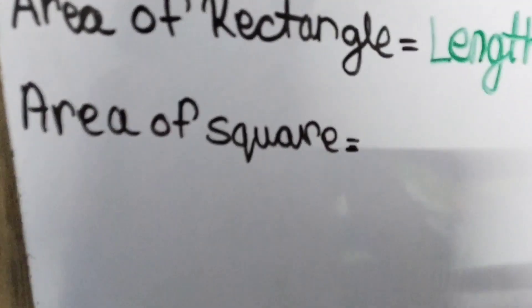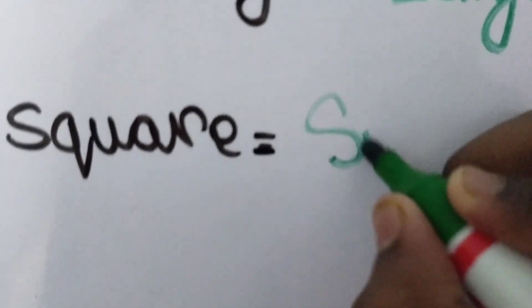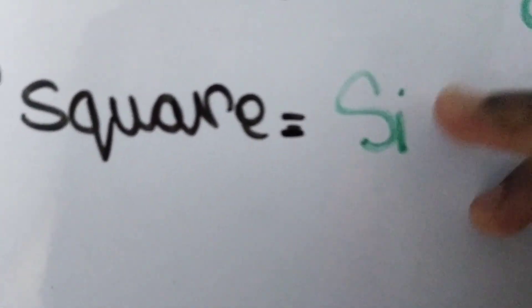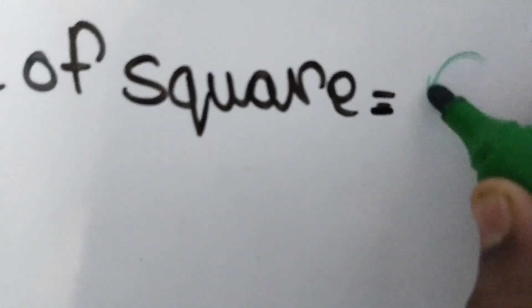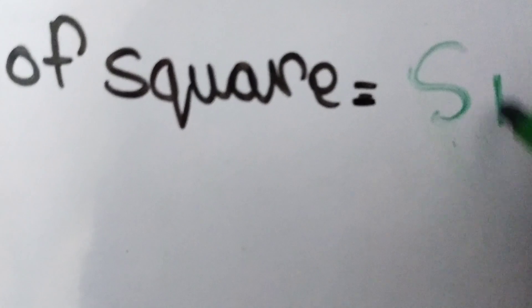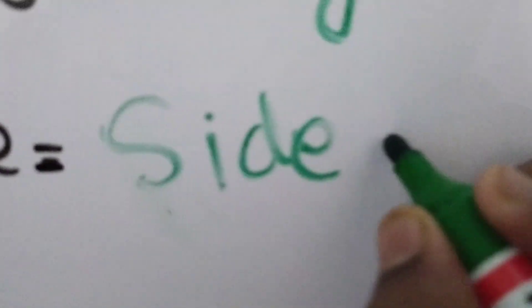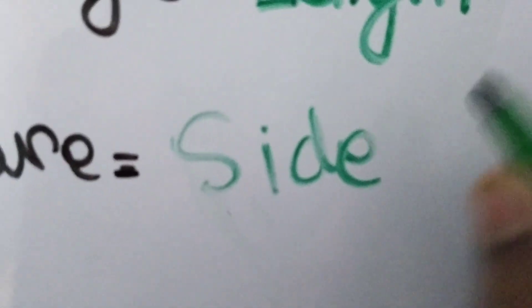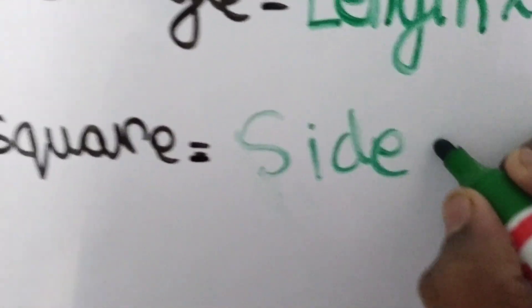The area of square is equal to side squared.